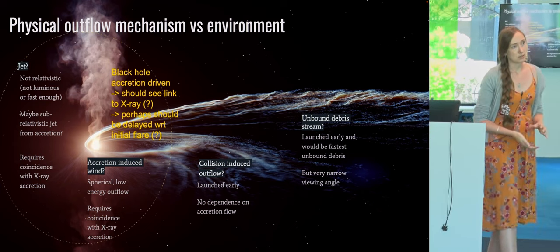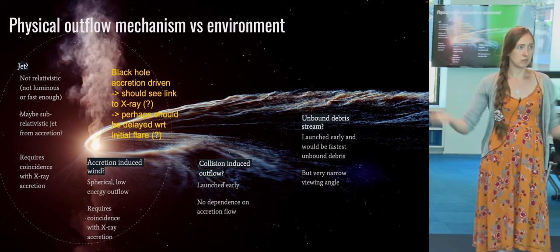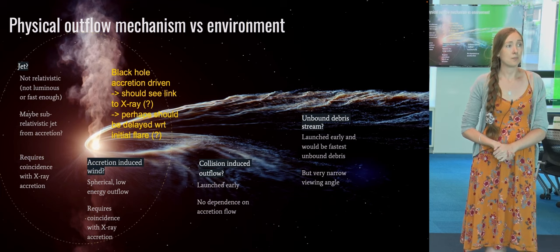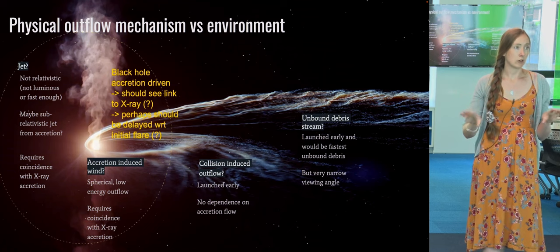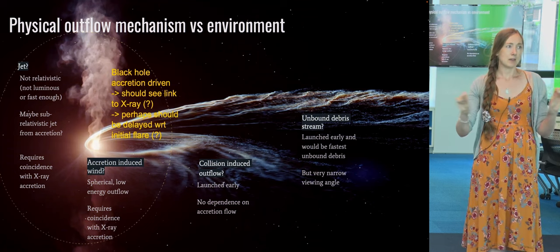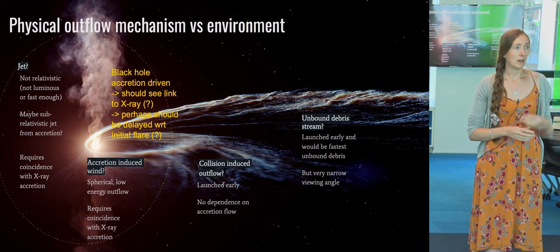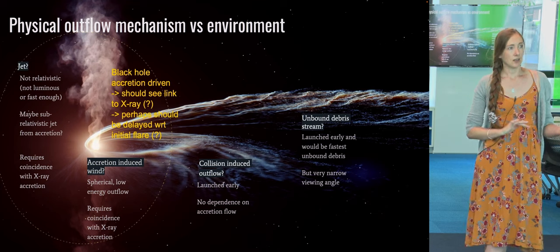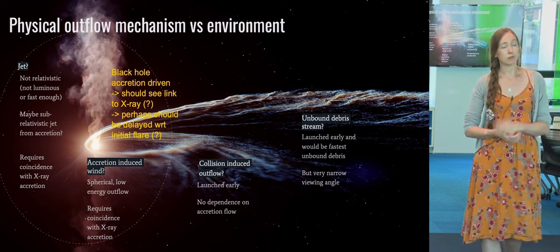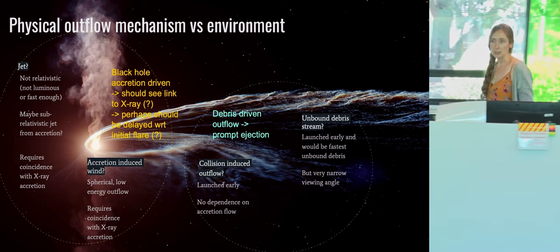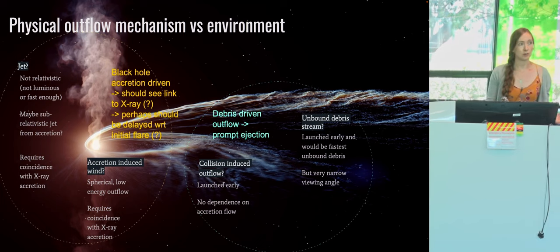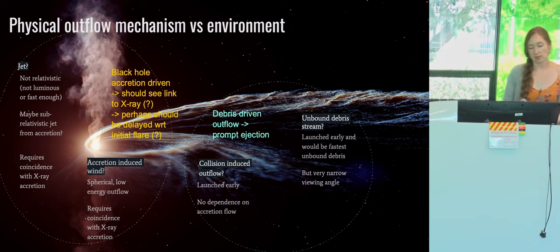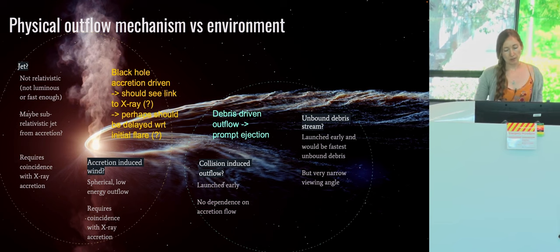There is also the unbound debris stream. When the star is initially disrupted it becomes a really long stream, and this unbound debris stream holds a lot of mass. It would be launched early, with the radio emission corresponding to the fastest unbound debris, but it tends to be a very narrow stream requiring a very narrow viewing angle. Since we get radio detections from about half of all TDEs, that doesn't quite check out — radio emission is quite common.